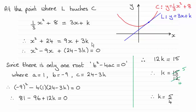And then we're heading towards a quadratic equation. So you can see that I've grouped the constant terms together, the 24 minus 3k. So I've got this in the form ax squared plus bx plus c equals 0, where a is 1, b is minus 9, and c is 24 minus 3k.